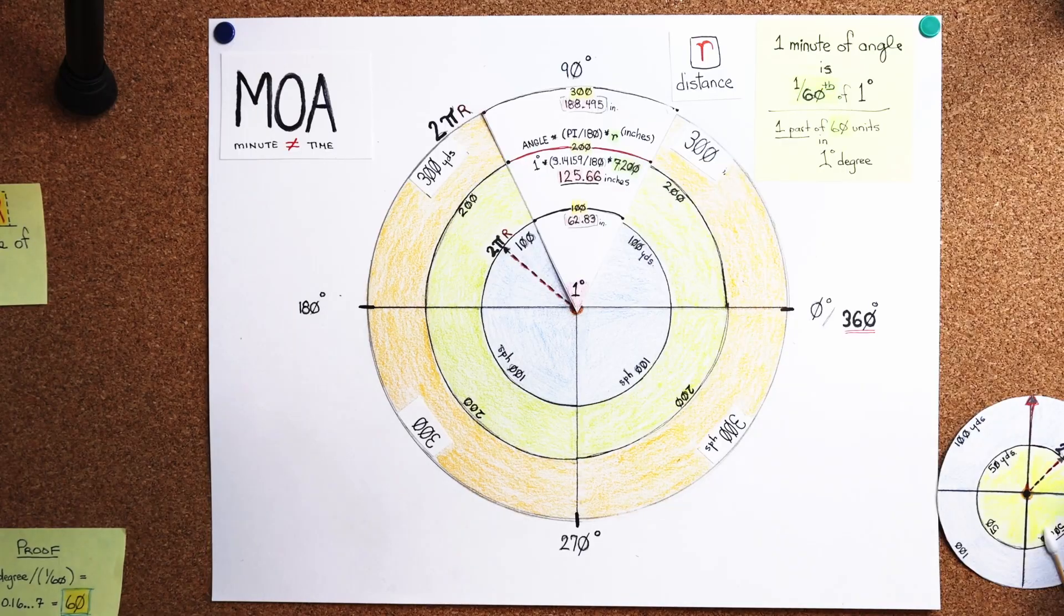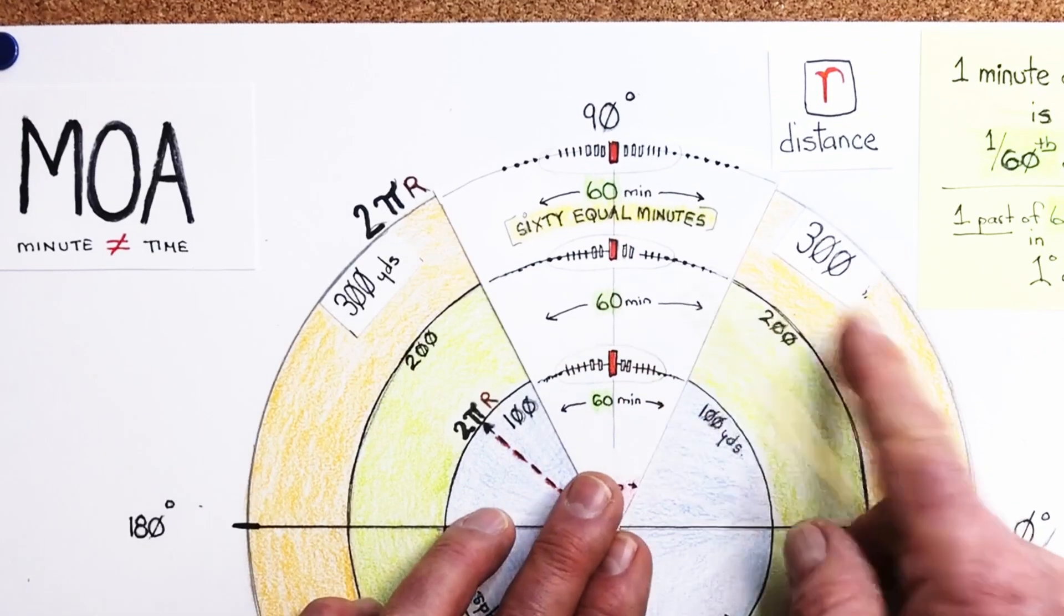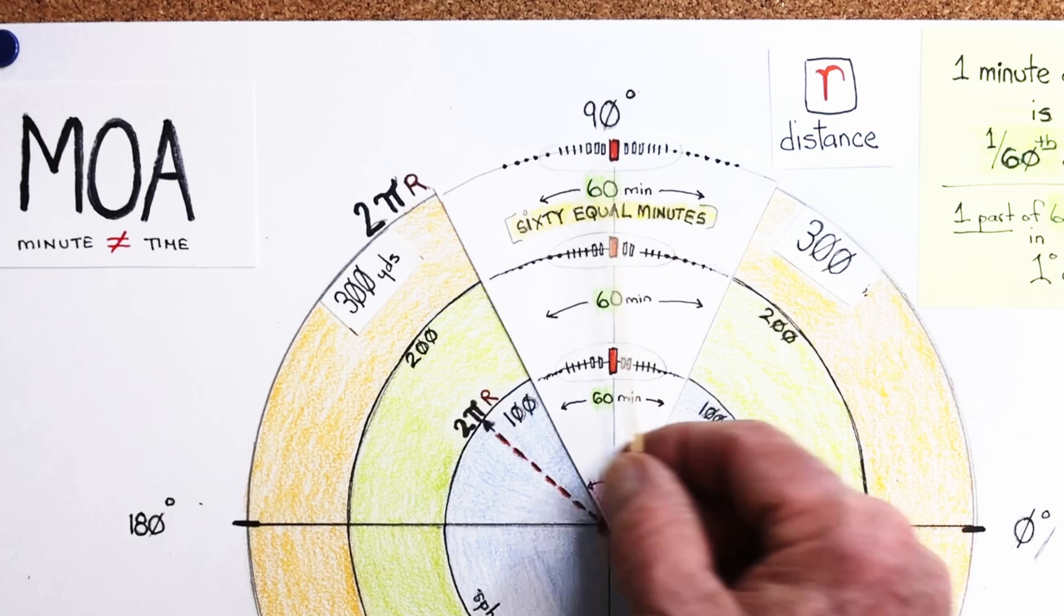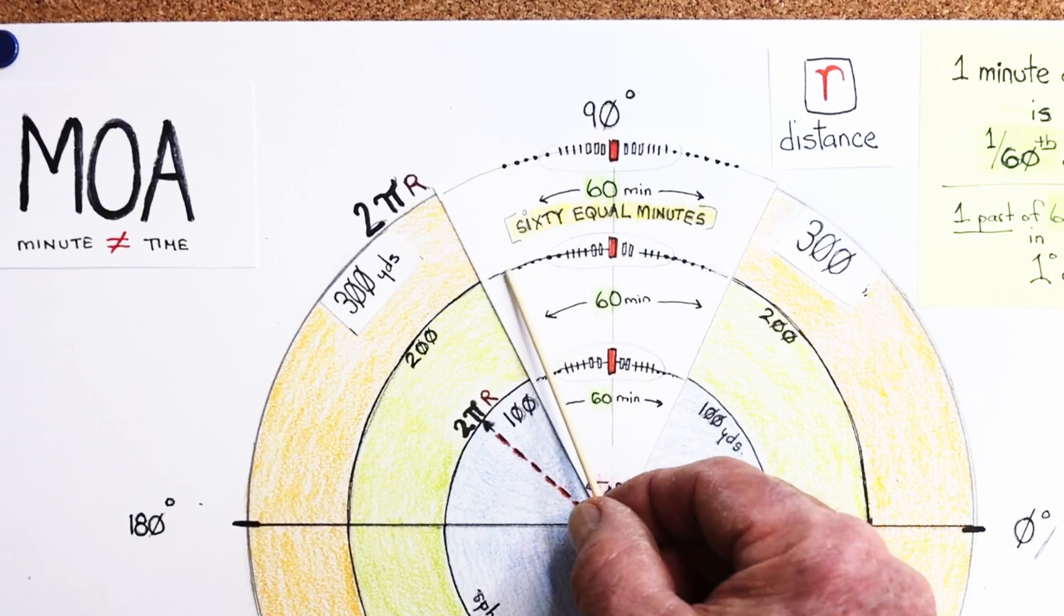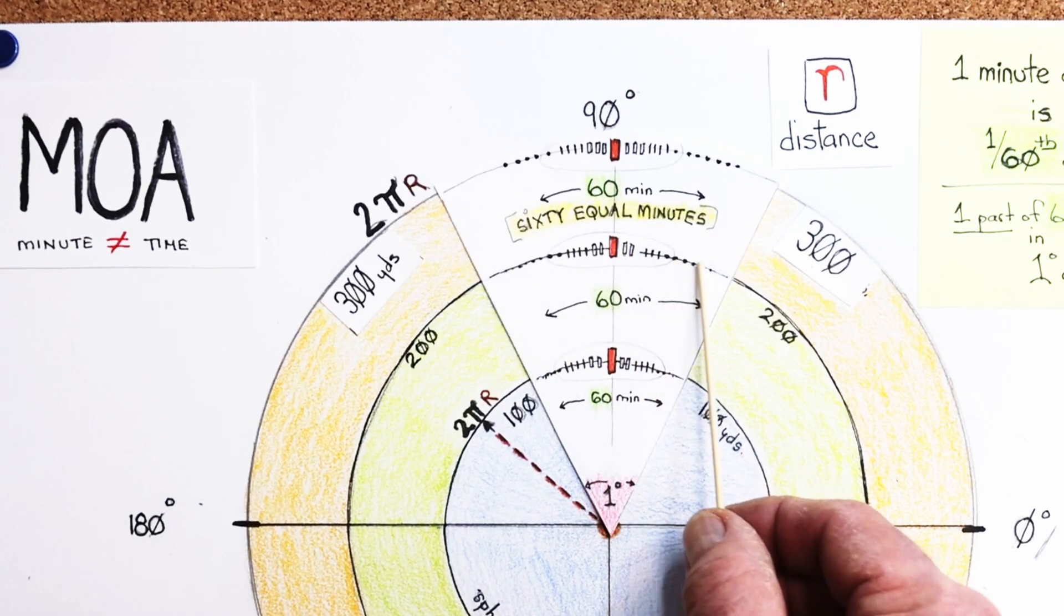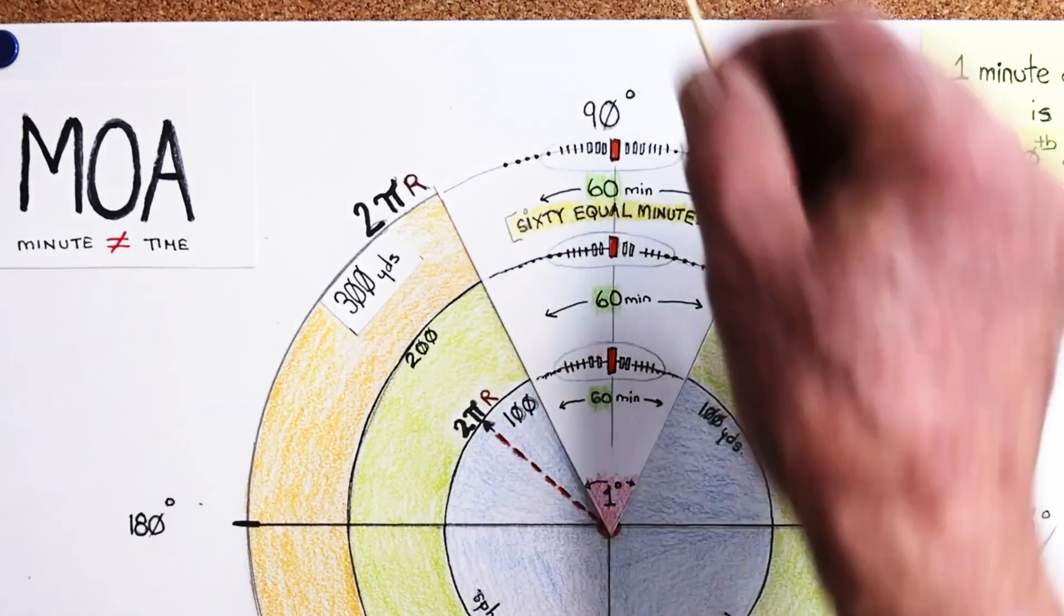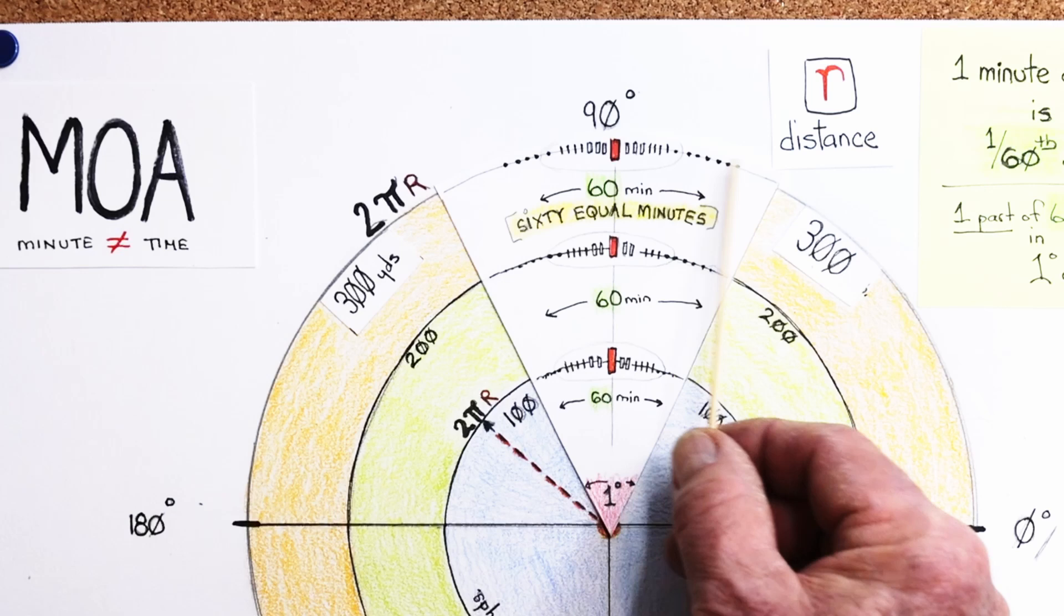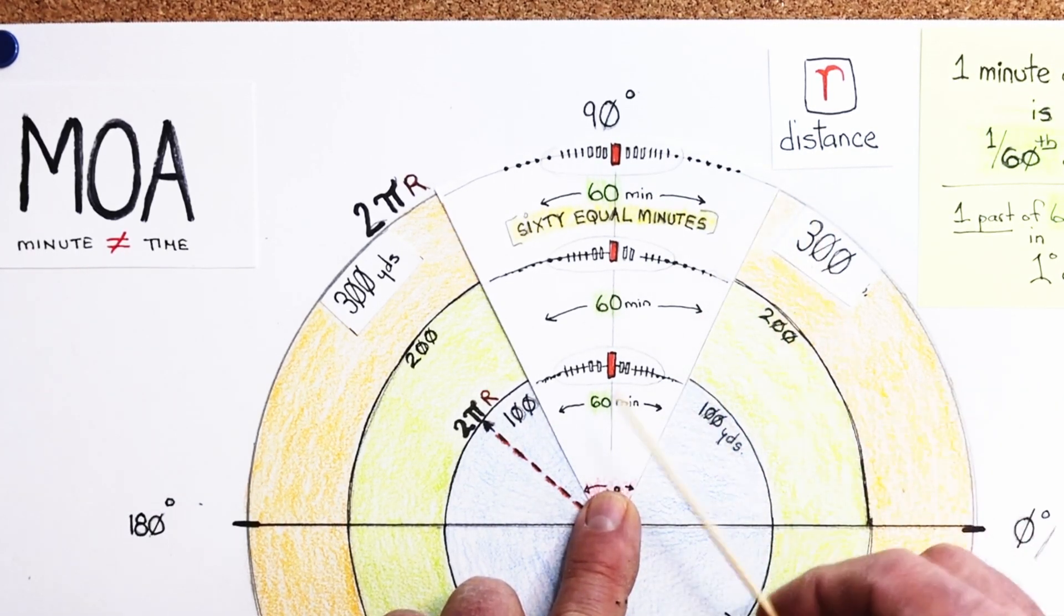Now we get into the nitty-gritty. This one minute of angle is 1/60th of one degree. We only want one part of this 60 units across here. You have 60 equal minutes across here. And then at 200, you have 60 equal minutes across. And then same thing, even out to 300 and 400 and 1,000 yards, you're always going to have 60 equal minutes. The thing that changes is the distance changes.